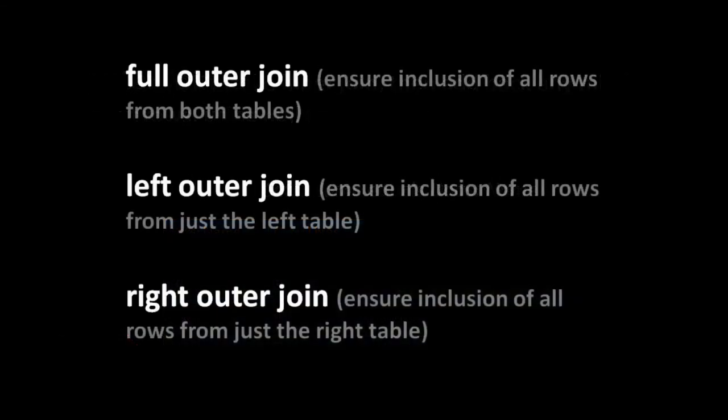There are actually three kinds of outer joins. A full outer join ensures inclusion of all rows from both tables. A left outer join ensures inclusion of all rows from just the left table - if you write A outer join B, the left table is A. A right outer join ensures inclusion of all rows from just the right table. In common parlance, we usually just say left join and right join, since the outer part is implicit. For a full outer join, you must always say full outer join.